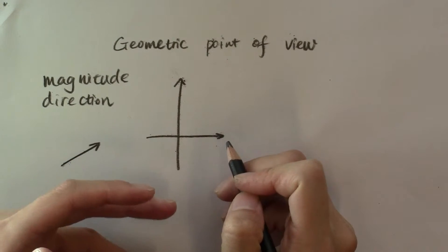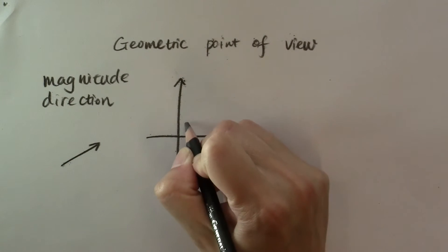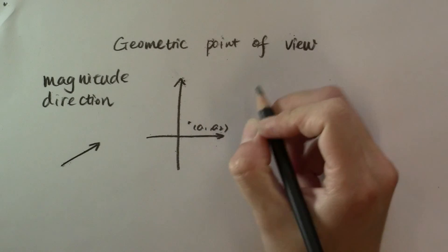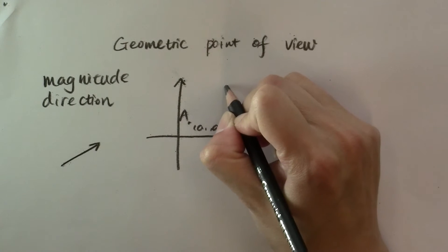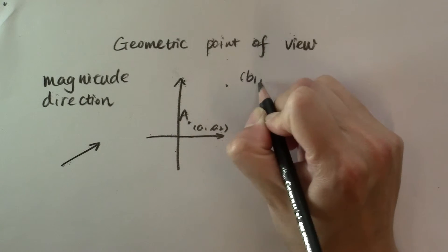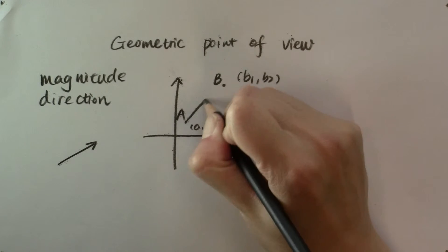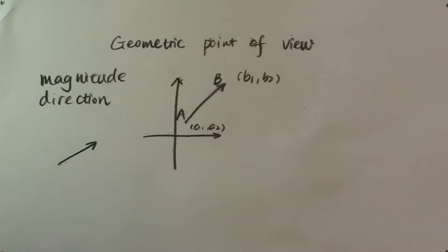we can draw a Cartesian coordinate system and pick two points with coordinates a sub 1, a sub 2 for point a, and b sub 1, b sub 2 for point b. The directed segment that points from a to b is a vector.